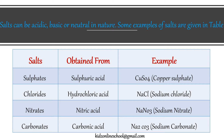Sulphates are obtained from sulphuric acid; an example is copper sulphate. Chlorides are obtained from hydrochloric acid; an example is sodium chloride. Nitrates are obtained from nitric acid; an example is sodium nitrate. Carbonates are obtained from carbonic acid; an example is sodium carbonate.